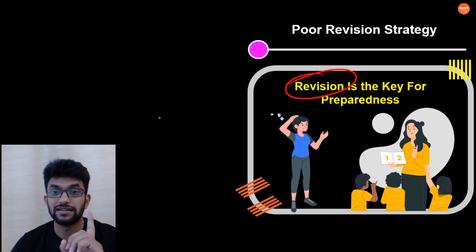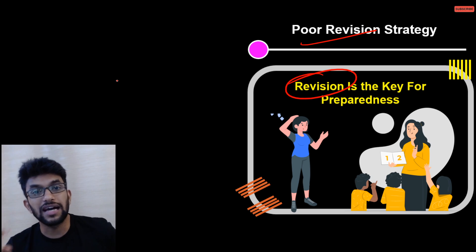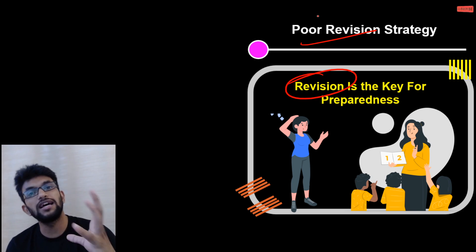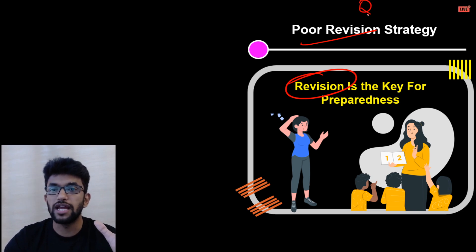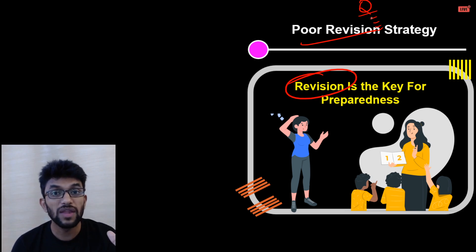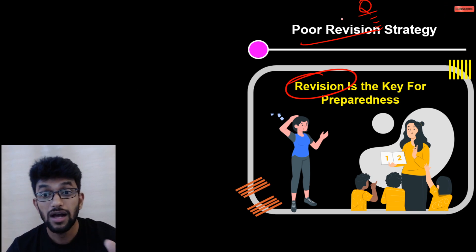Number one mistake is not revising properly. Don't just read your notes - that is not the correct strategy, guys. You have to solve MCQs, you have to practice questions. This is the number one mistake. When you are doing the questions, you identify where you are doing mistakes. That is where you learn. Do not revise by just reading the books. You have to practice questions. The questions will be application-based, so you have to apply your knowledge.